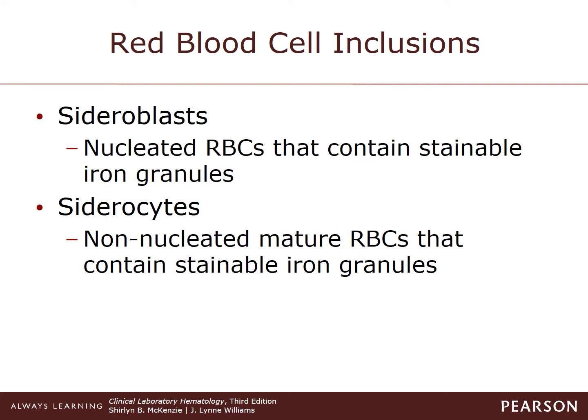Sideroblasts are iron granules found in erythroblasts. They stain with a Pearl's Prussian blue stain, not on the Wright stain, and are seen with nucleated red blood cells, usually within the bone marrow. Siderocytes are iron granules found in erythrocytes which can also be stained with the Pearl's Prussian blue stain. These are non-nucleated mature cells that have stainable iron granules.